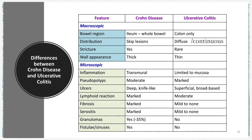This table is very important to summarize all the points. When you understand the disease process, there is no more memorizing — you'll be able to explain every single point written here. For example, regarding gross and macroscopic features: you know the bowel region involved and the distribution. You now know why strictures and wall thickening are present in Crohn's disease but not in ulcerative colitis — related to transmural involvement. For microscopy, transmural deep ulcers in Crohn's disease result in fibrosis, serositis, and fistula formation; while the special feature of ulcerative colitis is the formation of pseudopolyps.